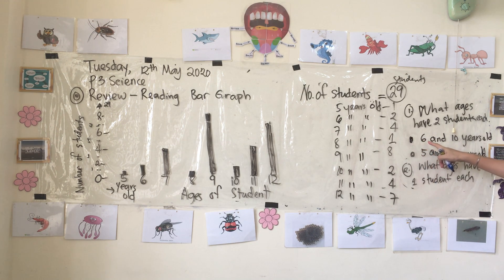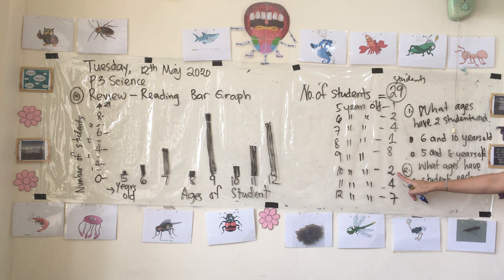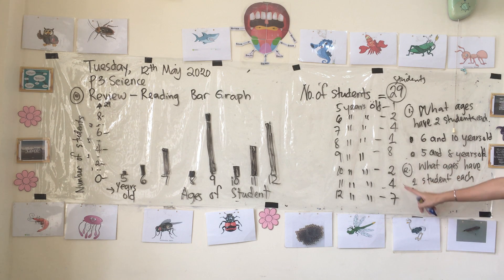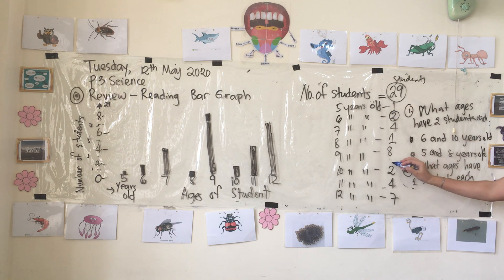Option one is: six years old and ten years old each have two students. There are two students that are six years old, and there are two students that are ten years old. So which ages have two students each? The answer is option one — six years old and ten years old.